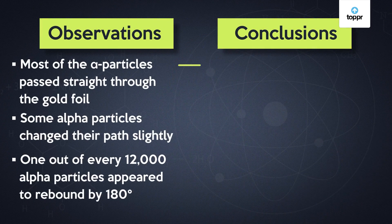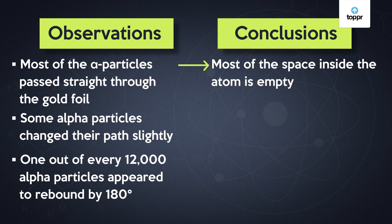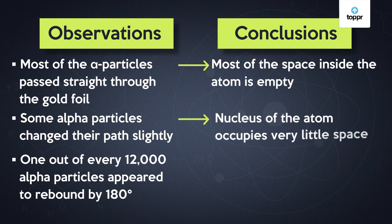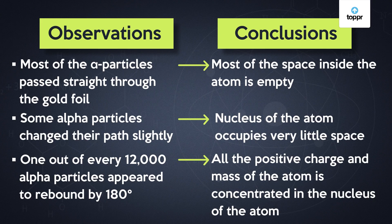Through this experiment, we got to know a lot about the atom. Now that we are clear on what Rutherford observed, let's see what he concluded. He said that: firstly, most of the space inside the atom is empty; secondly, the nucleus occupies very little space in the atom; and finally, all the positive charge and mass of the atom is concentrated in the nucleus.